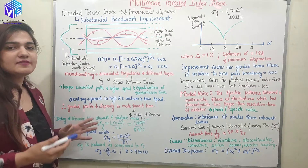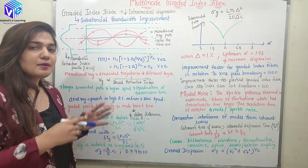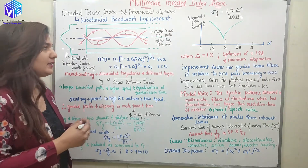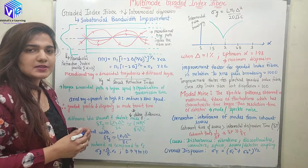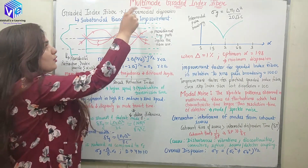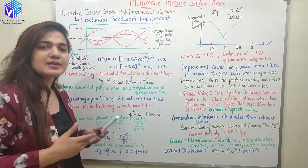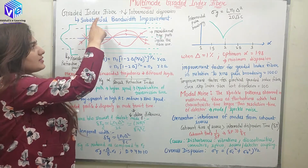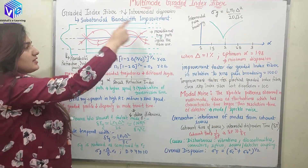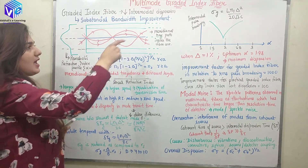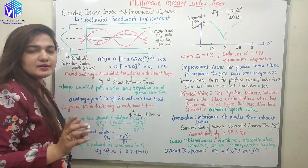Graded index fiber gives lesser intermodal dispersion. Why? Because we have different refractive indices at different parts of the core inside the graded index fiber. Because it has lesser intermodal dispersion, it gives lesser losses and it is going to give substantial bandwidth improvement. Now here you can see this is the optical fiber and this is the path of the meridional ray inside the optical fiber core.